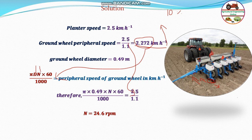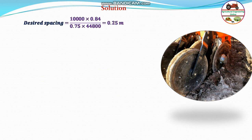This is the first part of the question — question number 52. Now coming to the next part. We need to find the desired plant-to-plant spacing. Per hectare, 84% germination is given and 44,800 is the number of plants required per hectare.